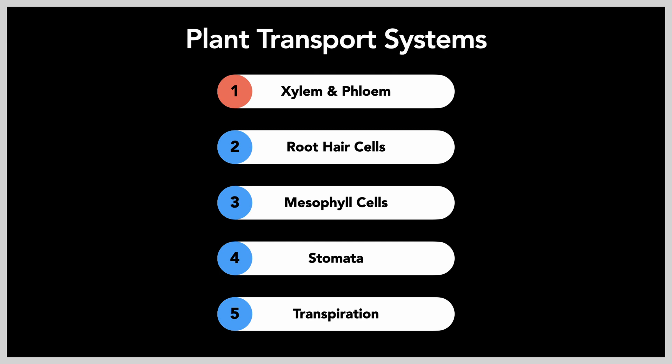I will go through the xylem and the phloem, the transport cells and tubules, the root hair cells and the mesophyll cells responsible for water uptake, photosynthesis, and gaseous exchange, the stomata in charge of regulating gas exchange, and the water regulating process of transpiration. These components all collaborate to form a functional and effective plant transport system.